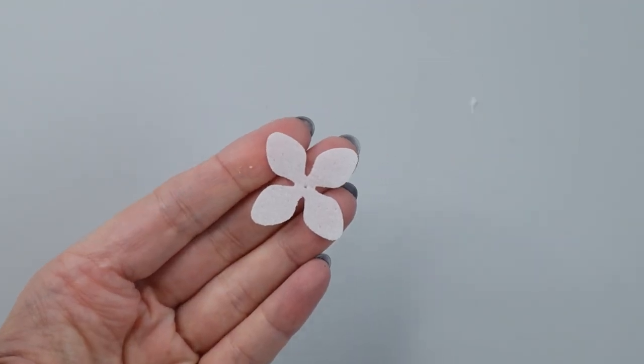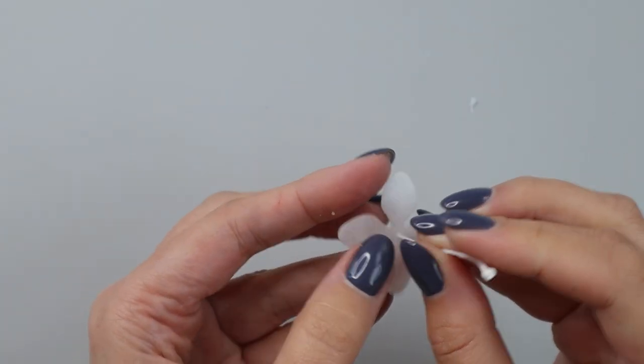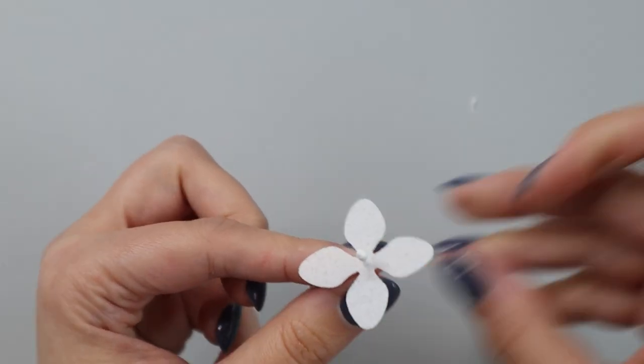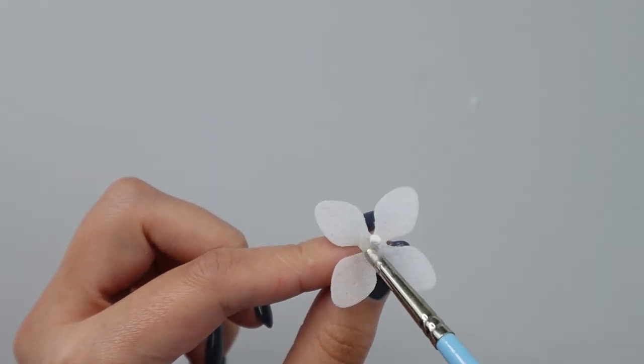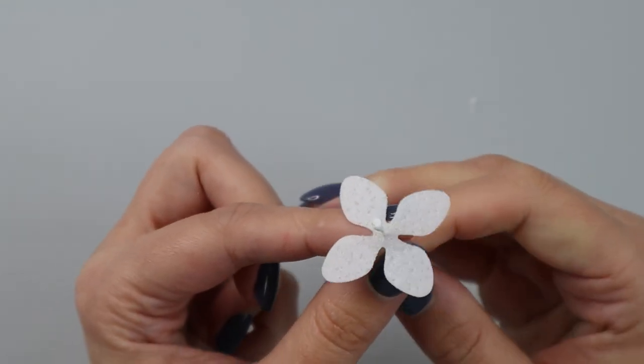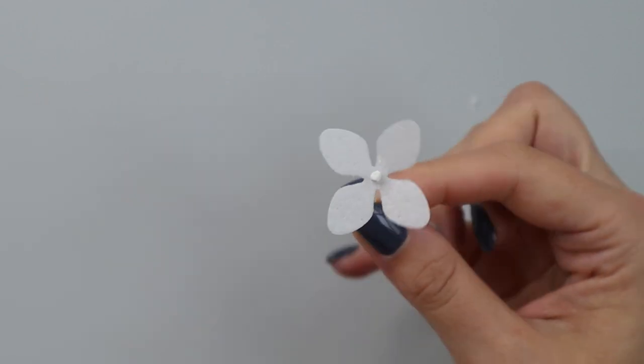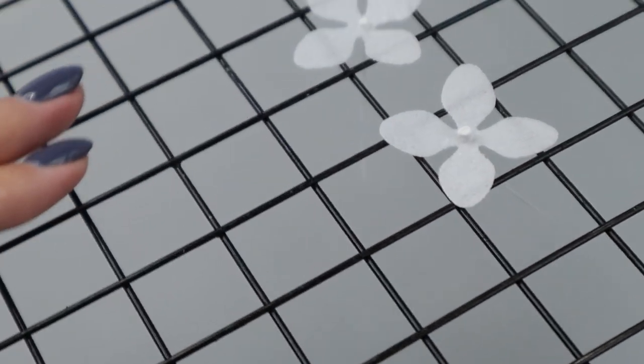So again, I'm taking my wafer paper flower, taking my stamen and pushing it through the center, and apply a small amount of wafer paper glue here at the base to make the stamen stick to my wafer paper hydrangea florets. Then I'm going to place it down into my wire rack.